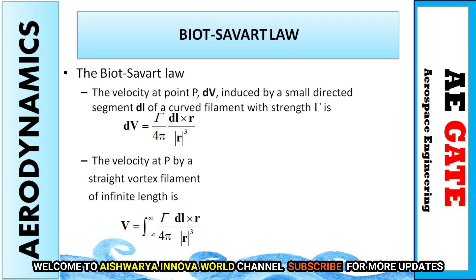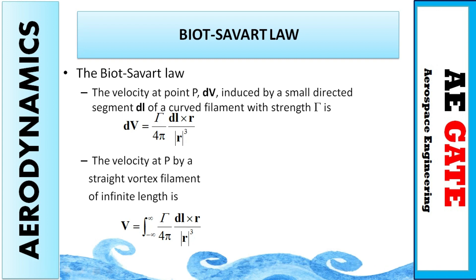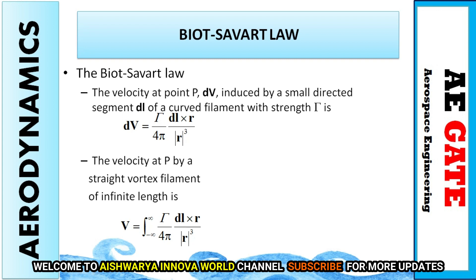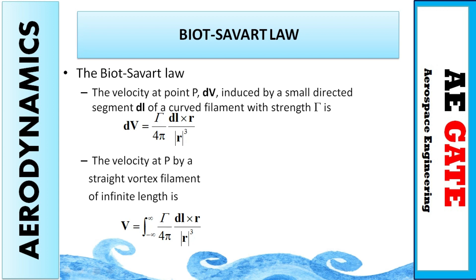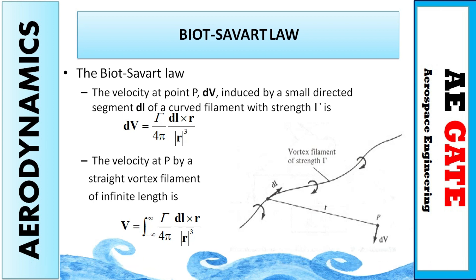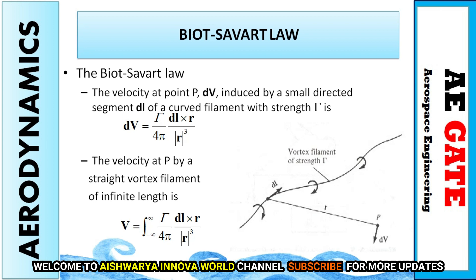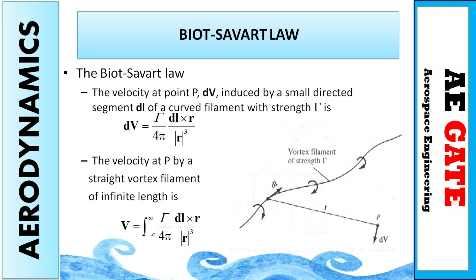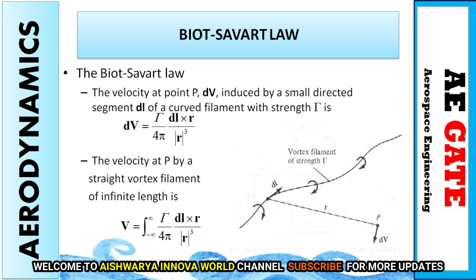Now comes Biot-Savart law. From a competitive exam point of view, MCQ questions often ask match-the-following of various laws, so you must be clear with the formula. The velocity at a point is induced by a small element in a direction along a segment dl of a vortex filament with strength gamma — that is, circulation — and the distance between the filament and the point is r. According to Biot-Savart law: dV = (gamma * dl × r) / (4 * pi * r^3).